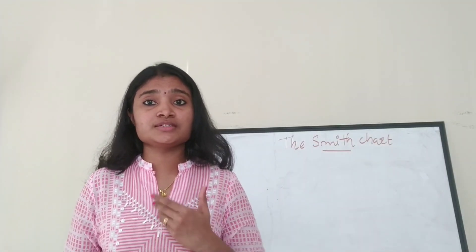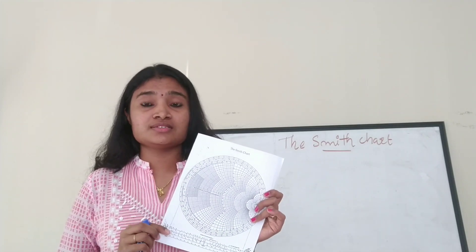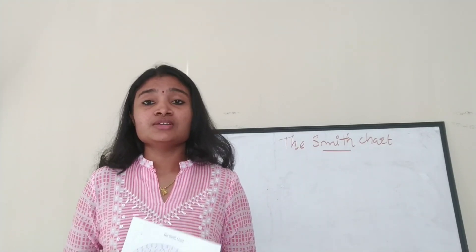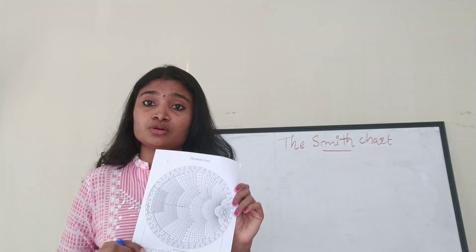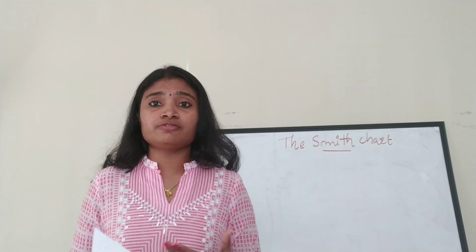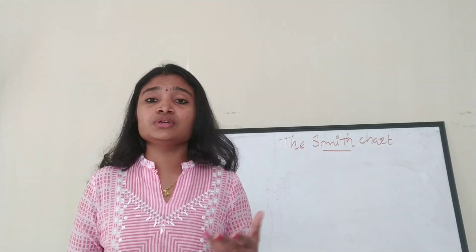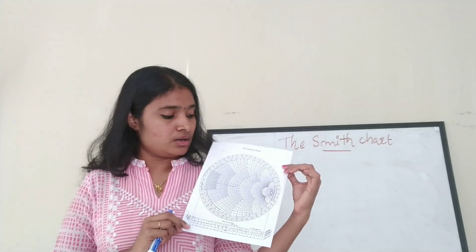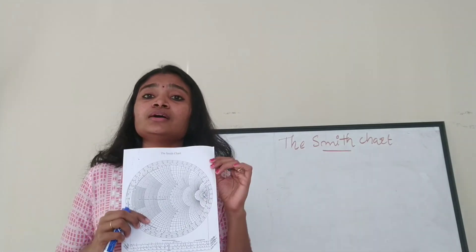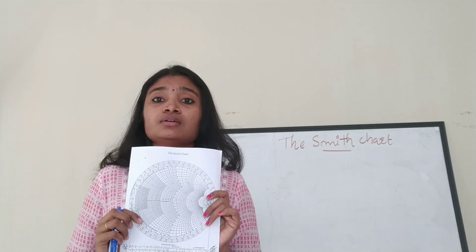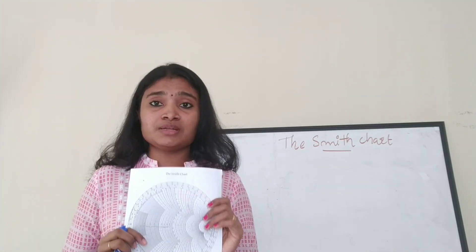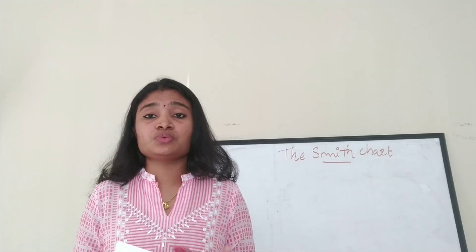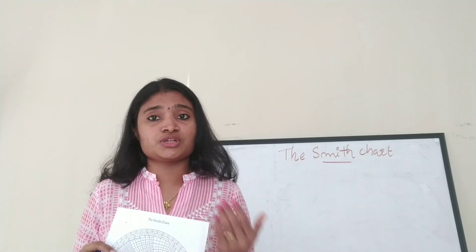Hello all, welcome to Easy Electronics. This video is a basic tutorial of the Smith Chart. The Smith Chart is a very important and famous tool, and all electronics people have seen it at least once. The Smith Chart is used for figuring out the properties of a transmission line graphically, such as impedance, voltage standing wave ratio (VSWR), reflection coefficient, and more.